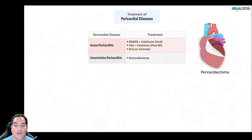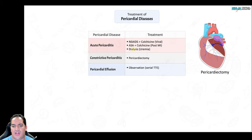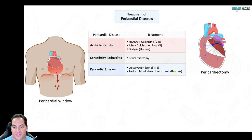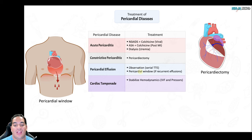For treatment: acute pericarditis is mainly about treating pain and the underlying cause. The most common cause is viral (Coxsackie B), so NSAIDs reduce inflammation and colchicine helps as a preventive measure. Aspirin and colchicine are best for post-MI pericarditis. For uremic pericarditis, NSAIDs and colchicine won't help — you need to dialyze the patient, starting or increasing dialysis sessions.